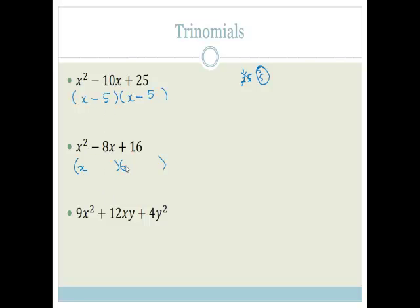And we've got x and x, and this plus here tells us that both the signs in these brackets are going to be the same. And this minus tells us they're both going to be minus. And we want to factorize this so that the two factors, when added up, give us an 8. So, our factors of 16 are 16 and 1, 8 and 2, and 4 and 4.